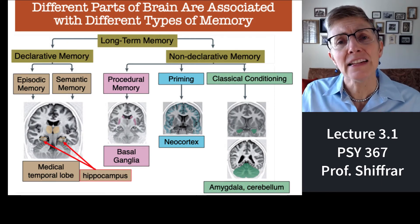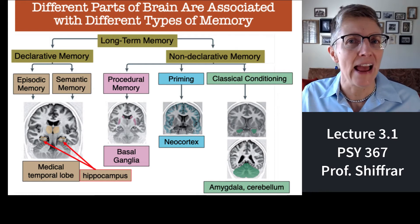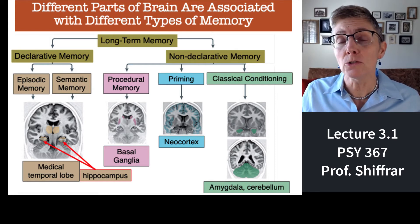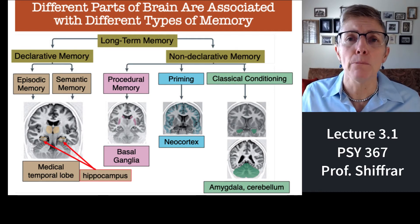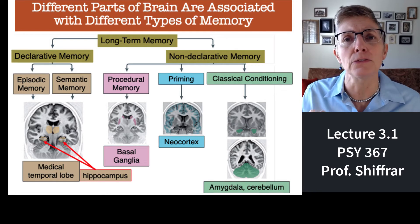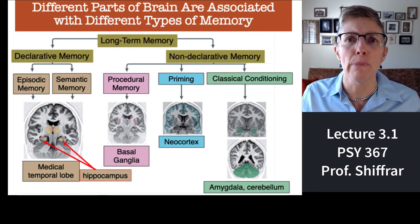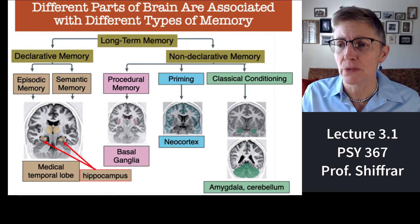The idea that different parts of the brain might underlie different aspects of memory has been upheld with subsequent brain imaging research. I don't want you to memorize this, but I want you to get a feel for the fact that different kinds of memory seem to rely, more or less, on different parts of the brain.